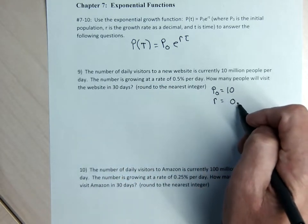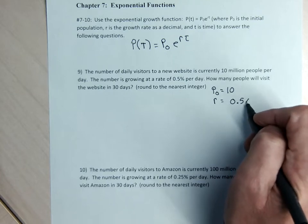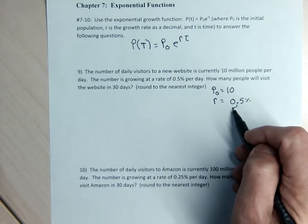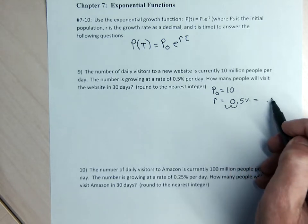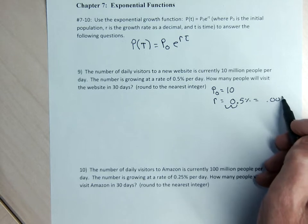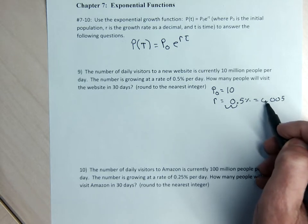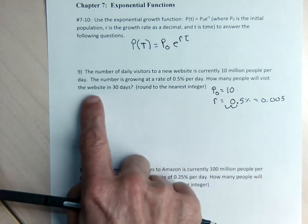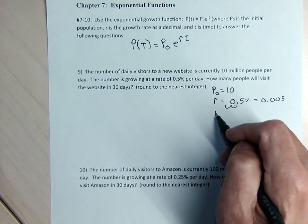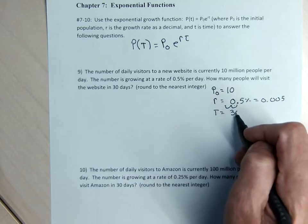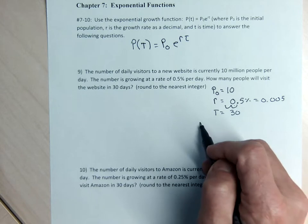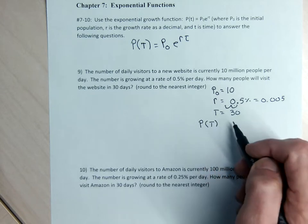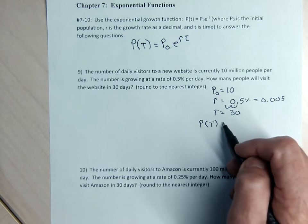I'm going to convert 0.5% to a decimal by moving the decimal over twice to get 0.005. The question asks how many people will visit the website in 30 days. T stands for the number of days, and P of T stands for the number of people visiting the website, so P of T equals the starting amount times E to the RT power.